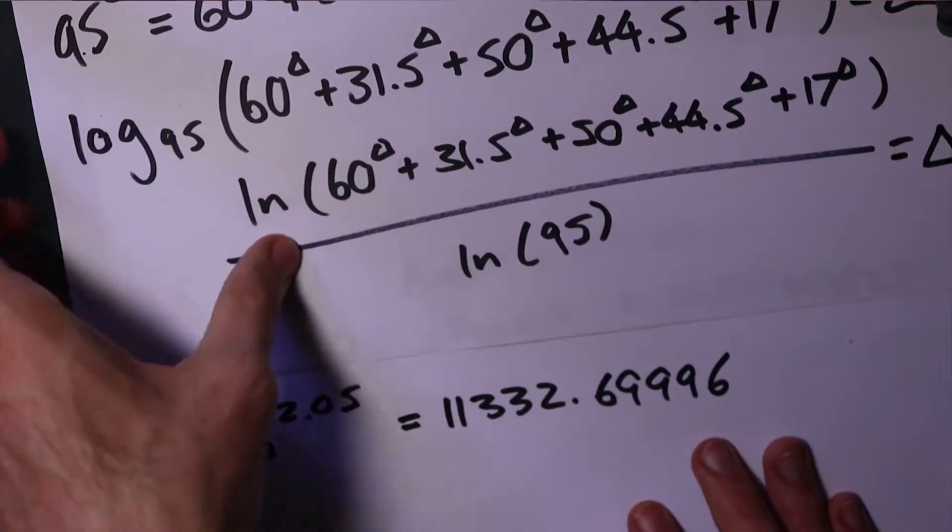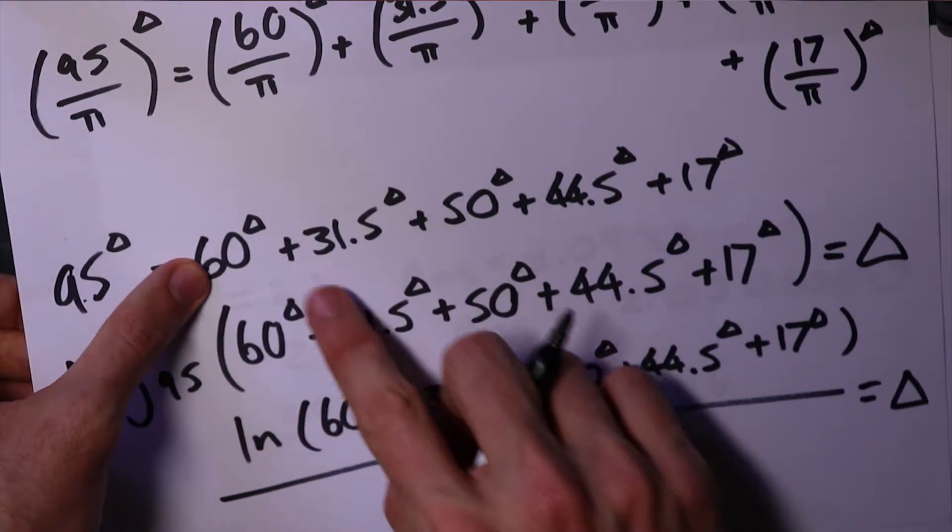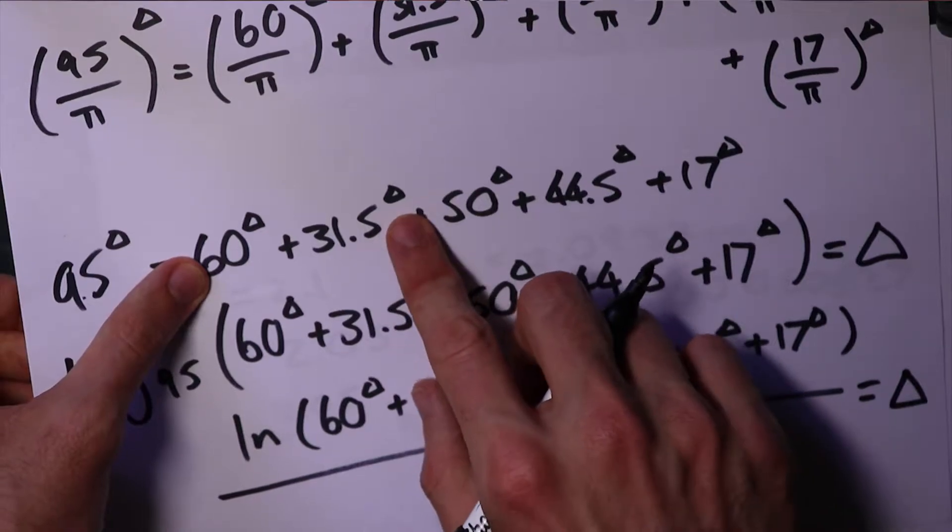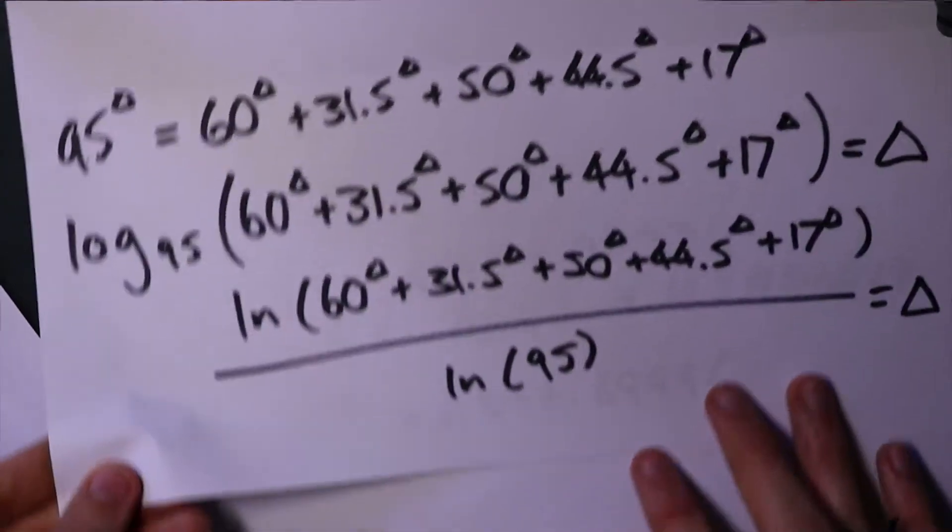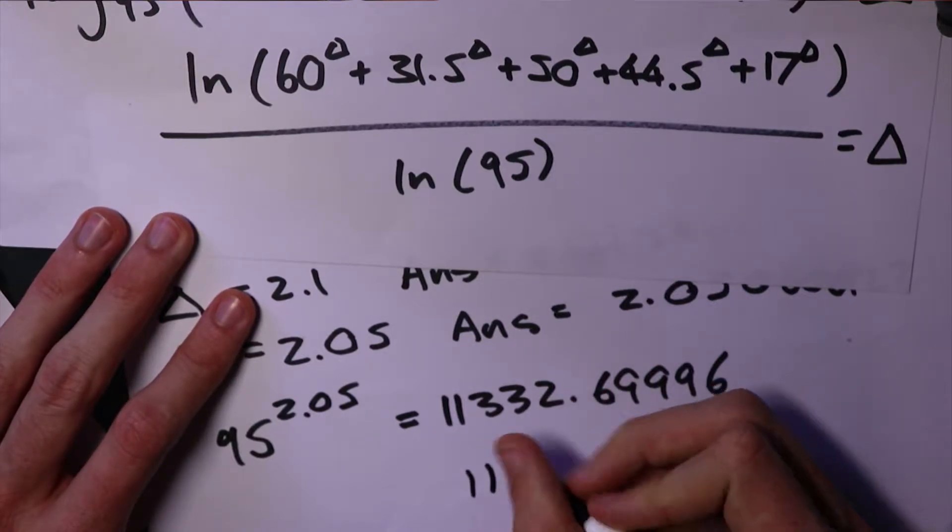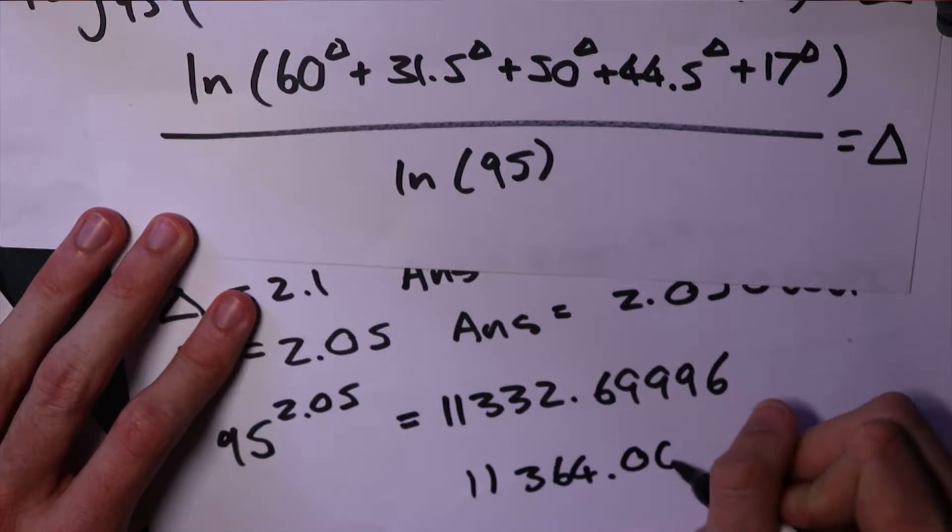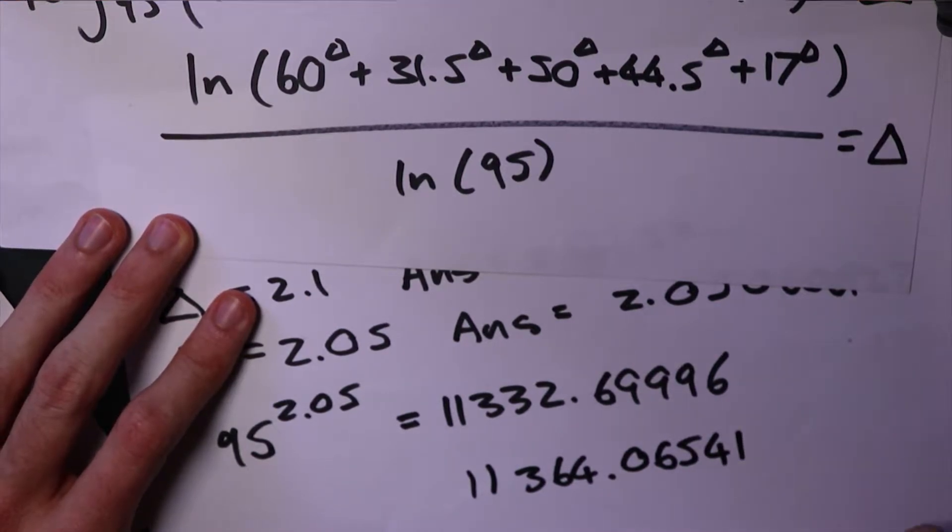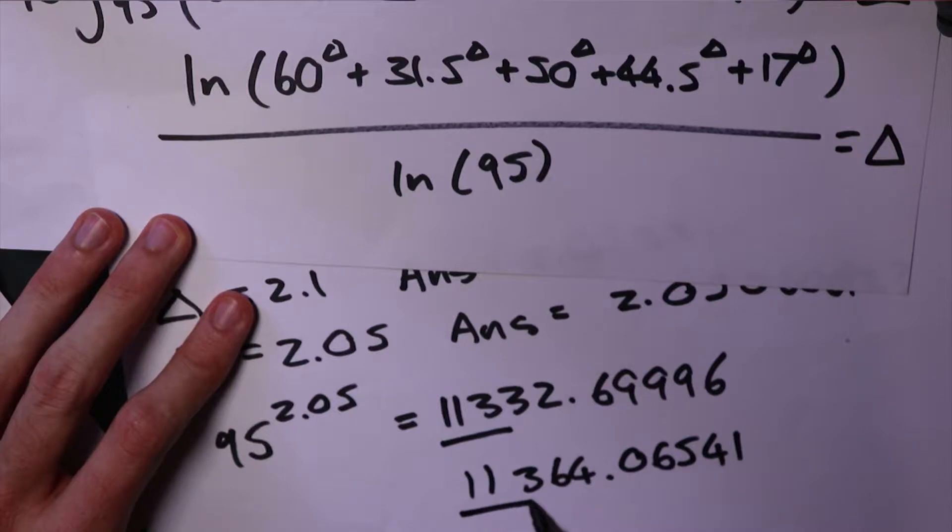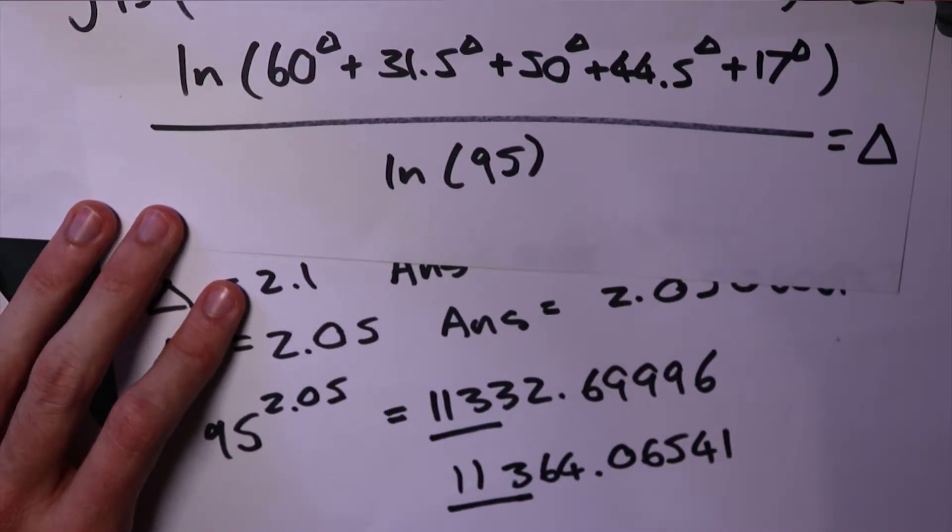And now, you can test it for yourself, I won't write it out, but if you put 60 to the power of 2.05 plus 31.5 to the power of 2.05 for all the rest, we get 11364.065. So three significant figures we're pretty close.